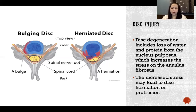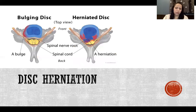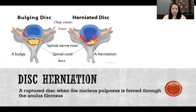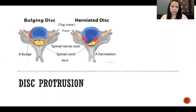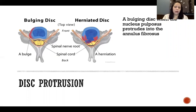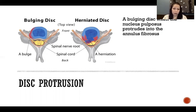Disc herniation is a ruptured disc where the nucleus pulposus is forced completely through the annulus fibrosis — the annulus fully ruptures and the jelly escapes the disc. Disc protrusion, also called a bulging disc, is when the nucleus pulposus bulges into the annulus fibrosis but the annulus is not completely ruptured, so the nucleus does not completely escape.